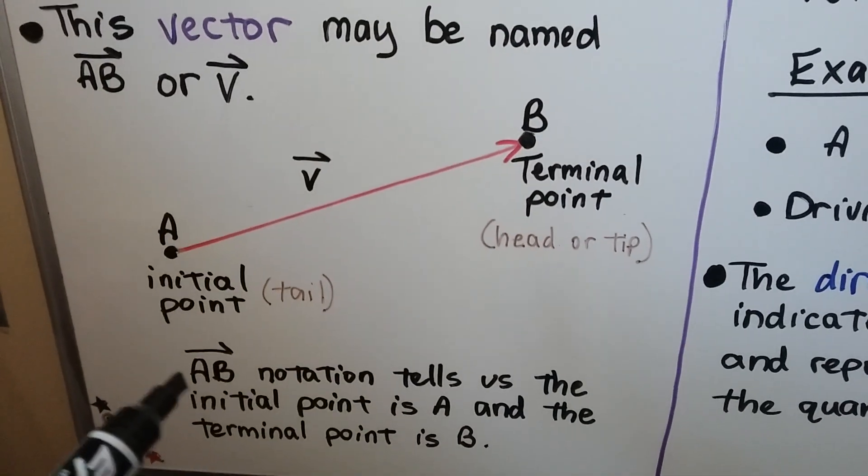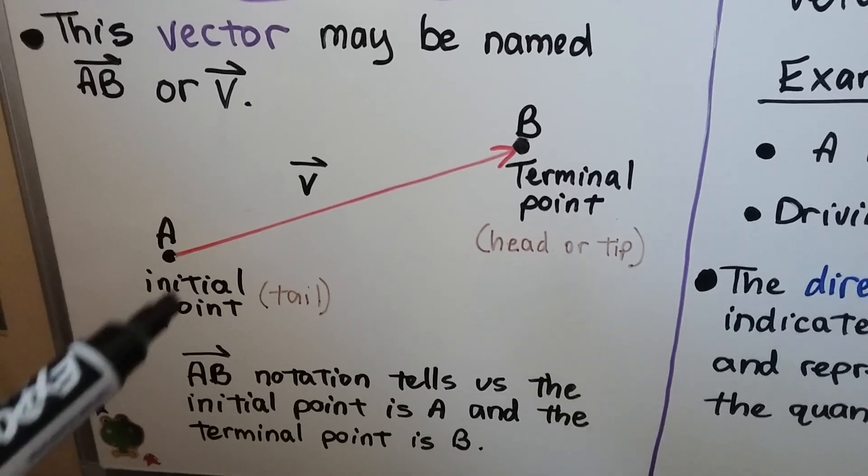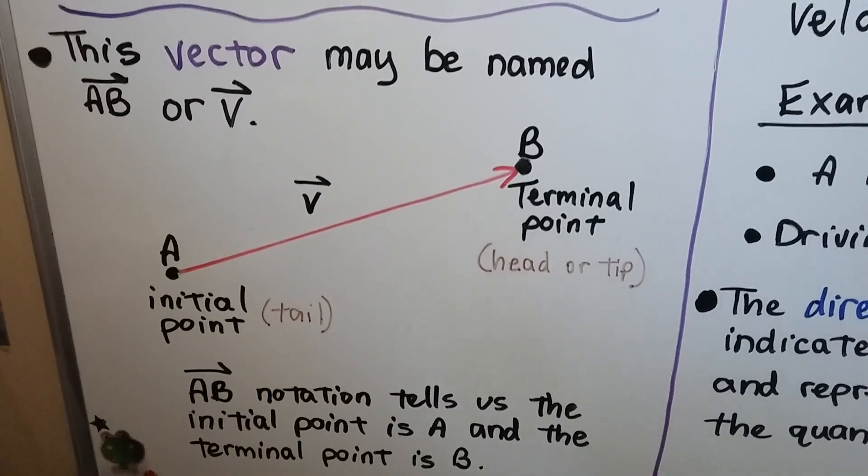When you see this AB with this half arrow over the top, this notation tells us the initial point is A, and the terminal point is B. See, it's going in that direction.